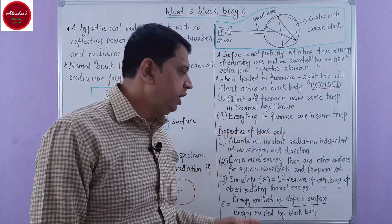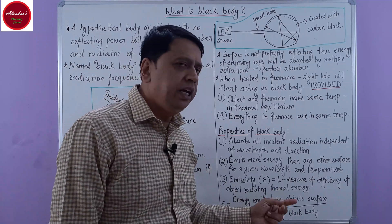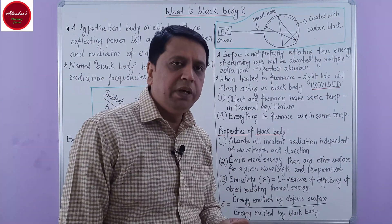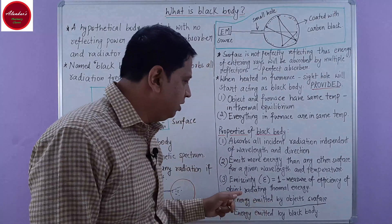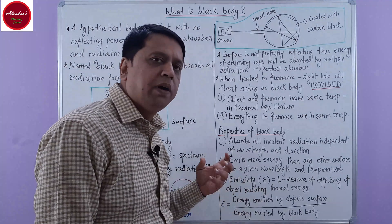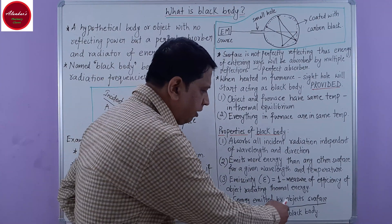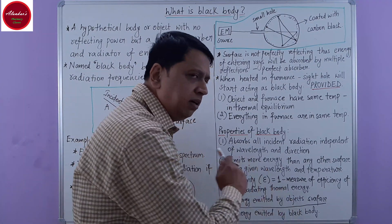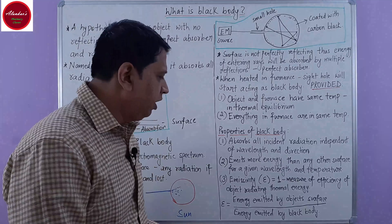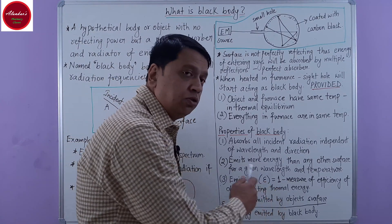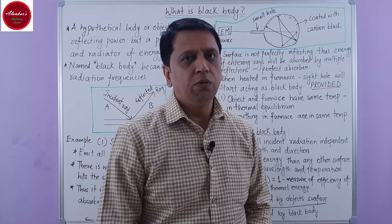The third property is that the emissivity — that is, the epsilon value — of a black body equals one. Emissivity is simply a measure of the efficiency of an object in radiating thermal energy: whatever energy is emitted by any object per unit area per second. That is why the emissivity of a black body equals one. The emissivity value equals the energy emitted by the object's surface divided by the energy emitted by a black body. If any object is very close to the definition of a black body, its emissivity value will equal one, and it can be termed a black body.